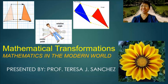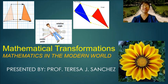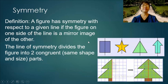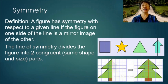Hi there, this is Mathematics Alive and our lesson is mathematical transformations. Let us first deal with the concept of symmetry. Definition: a figure has symmetry with respect to a given line if the figure on one side of the line is a mirror image of the other. The line of symmetry divides the figure into two congruent parts.